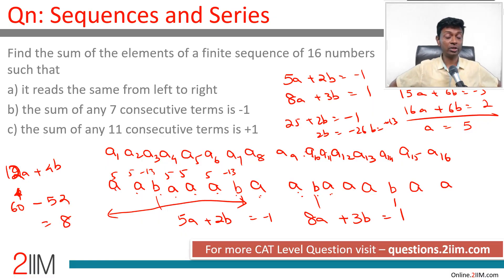Wonderful question. Not easy, but not very difficult either. More like a logically constructing a puzzle. It is symmetric. So a1 is equal to a16, a2 equal to a15. Sum of any 7 consecutive terms is minus 1, so every 7th term is equal. Every 11th term is equal. So a1 should be equal to a8, a1 should be equal to a12, a1 should be equal to a16. And then we make all the a's and all the b's. So we effectively boil down to only a's and b's in this entire sequence. Two equations, two variables, we are done.